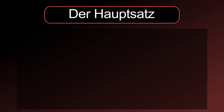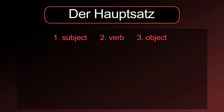Der Hauptsatz. A basic German sentence is made of a subject and a verb. Most of the sentences will also have an object, but that is not required to build a grammatically complete sentence.